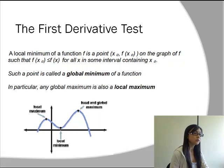In particular, any global maximum is also a local maximum, and any global minimum is also a local minimum.